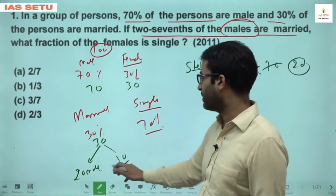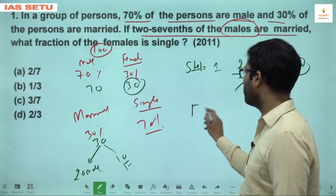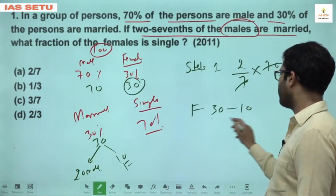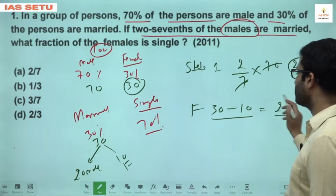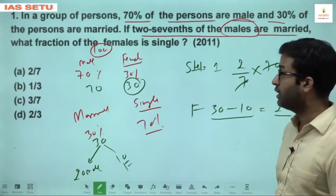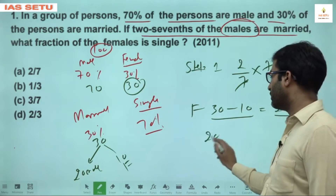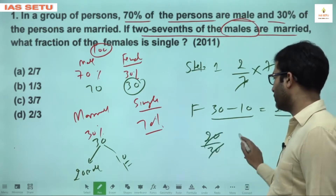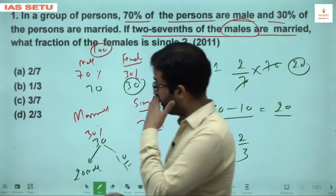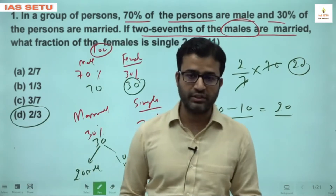Step 2: Total females = 30. Out of 30, 10 are married, so 20 are single. Step 3: Single females out of total females = 20/30 = 2/3. So the answer is D for Question 1.